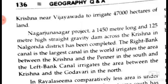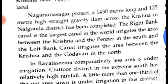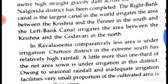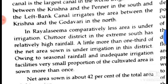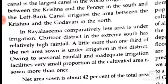The right wing canal is the largest canal in the world, irrigating the area between the Krishna and the Tungabhadra in the south. The left wing canal irrigates the area between the Krishna and the Godavari in the north. A significant portion of the Rayalaseema area is now under irrigation. Chittor district, in the extreme south, has relatively higher rainfall, with a little more than one third of the net area sown under irrigation.